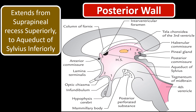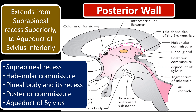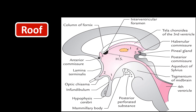The posterior wall extends from the suprapineal recess superiorly to the aqueduct of Silvius inferiorly. The structures seen in the posterior wall are: suprapineal recess, habenular commissure — seen just behind the labeled area — pineal body and its recess, posterior commissure, and the aqueduct of Silvius.